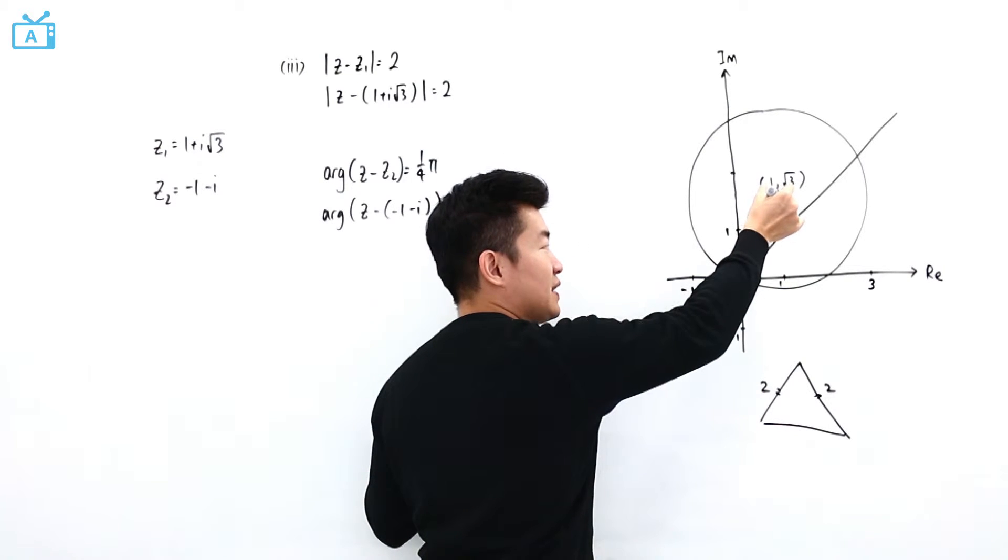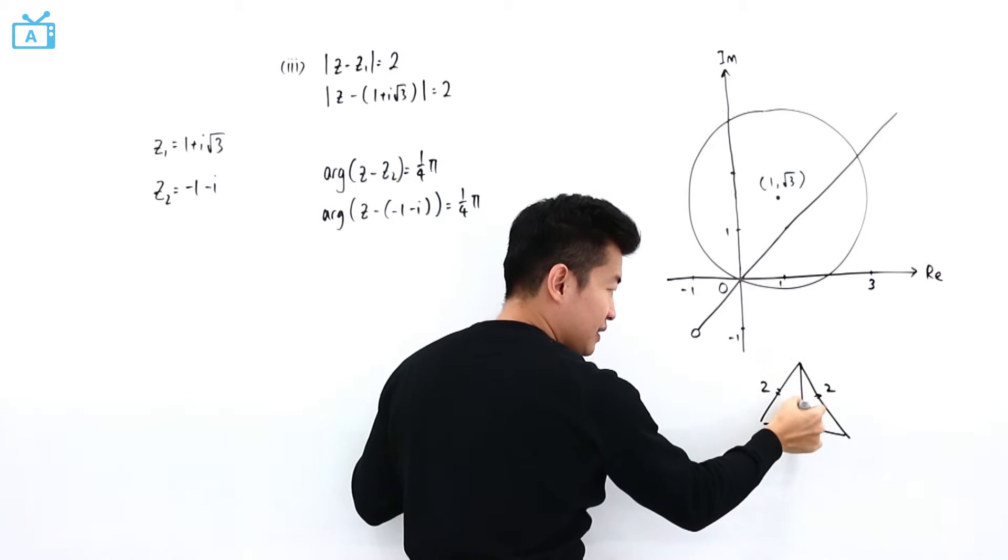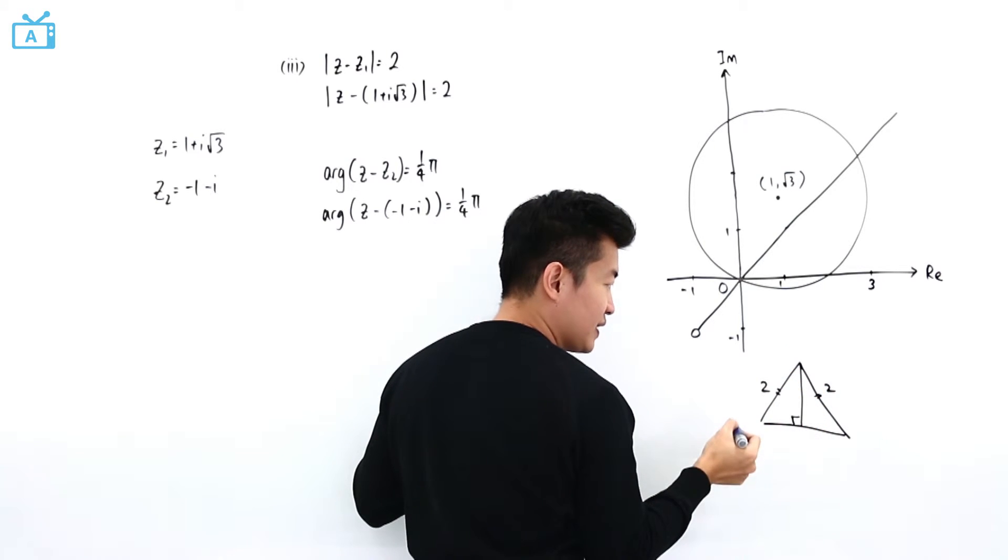this point, the center of the circle, is directly above 1, which means this angle here is 90 degrees,